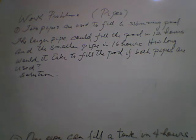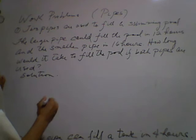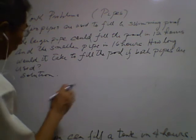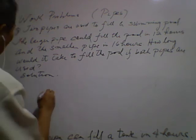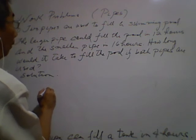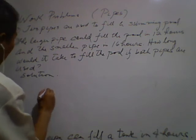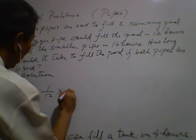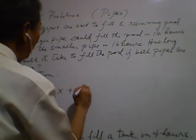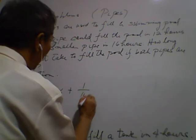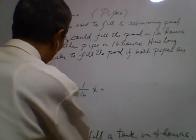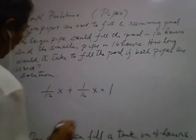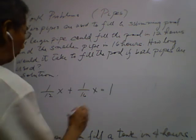To solve this kind of problem we represent the functional part of each pipe in doing the job. For the larger pipe it takes 1 over 12 of the total number of hours. The other pipe is 1 over 16 of the total number of hours used. And total work done is one whole of the combination of the two work. So first you get the